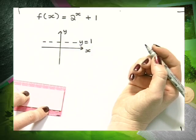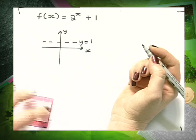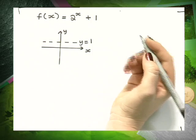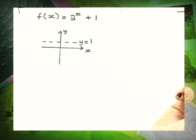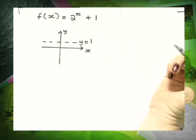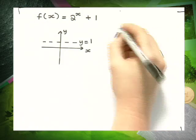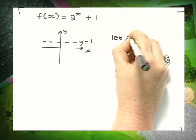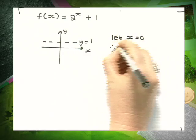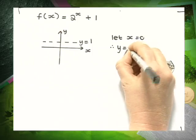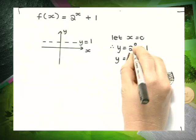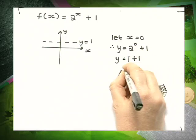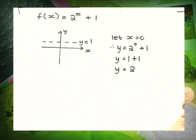Next, determine the y-intercept. Remember, the magic number for exponential functions is 1, and therefore it would normally have a y-intercept of 1. But this exponential function has moved up by 1 unit. We can prove this. To find a y-intercept, let x equal 0. Therefore, y equals 2 to the power of 0 plus 1. Remember, 2 to the power of 0 is 1, plus 1 equals 2. So we have a y-value of 2.